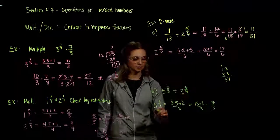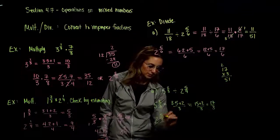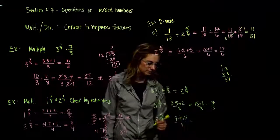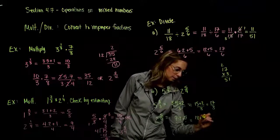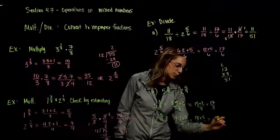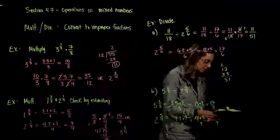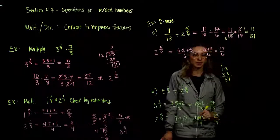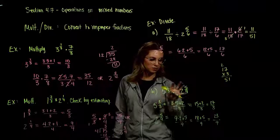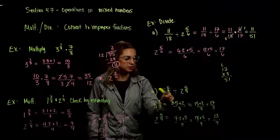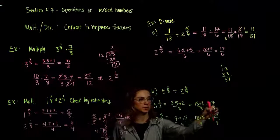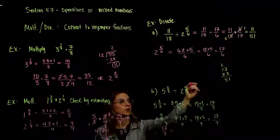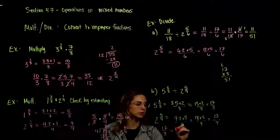Then our second mixed number, two and five-ninths: nine times two plus five, all over nine. Nine times two is eighteen; we add five to get twenty-three over nine. So we have our improper forms. Five and two-thirds was equivalent to seventeen-thirds, divided by two and five-ninths in its improper form, twenty-three-ninths.